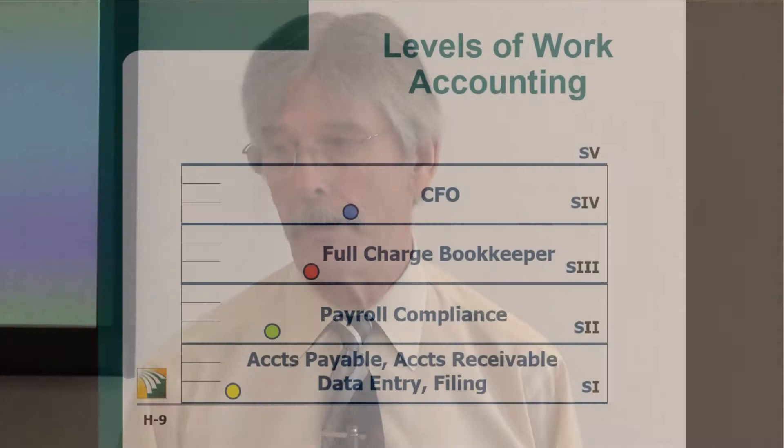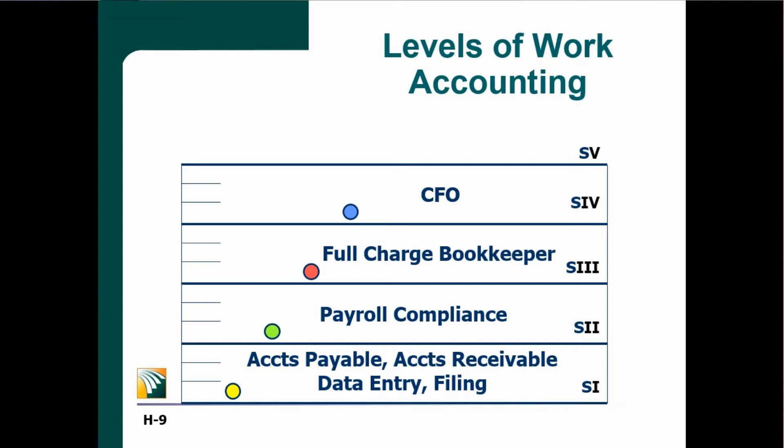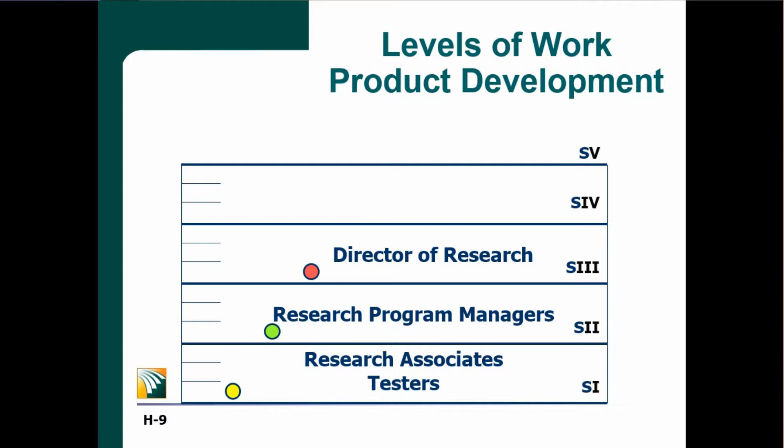On a long time span project, does stuff come in sideways and screw everything up? Absolutely. And I will hold a stratum three manager accountable for creating those alternate paths to the goal — they've got the capability to do it. Now on page seven or eight, you have other disciplines like accounting, product development, and sales.